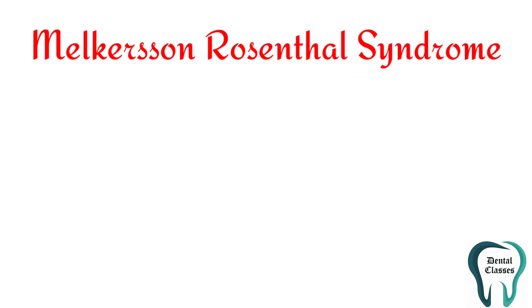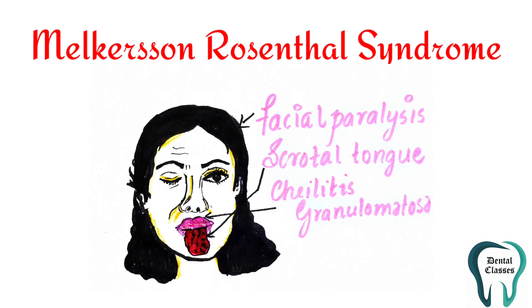As asked by one of the subscribers, Rahul, to give tricks so that you can remember the topic easily, this is my attempt to draw a picture comprising all three features. In this figure, you can see facial paralysis, scrotal or fissured tongue, and chelitis granulomatosa — which means swelling of the lips. Okay, so that's all, thank you.